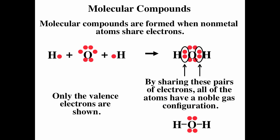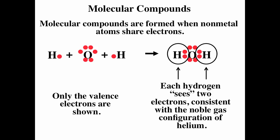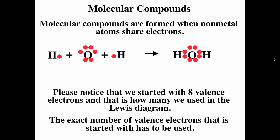Looking at water as another example, hydrogen each starts with one valence electron and oxygen starts with six. When hydrogen and oxygen share a pair of electrons, the hydrogen sees two, giving it the noble gas configuration of helium, and oxygen sees eight, giving it noble gas configuration. We started with eight valence electrons total and we used exactly eight valence electrons — you always have to use exactly the number of valence electrons that you start with.